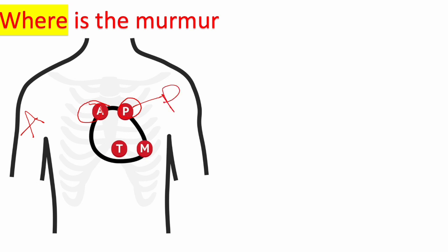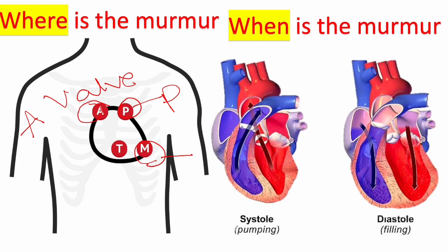If the murmur is best heard over the apex, then the mitral valve is affected — that's the fifth space. So now that you know which valve is affected based on the description, the next step is to determine whether it's stenosis or regurgitation. That's answered by the second question: when is the murmur — is it systolic or diastolic?